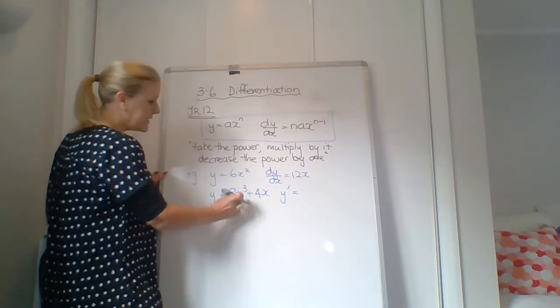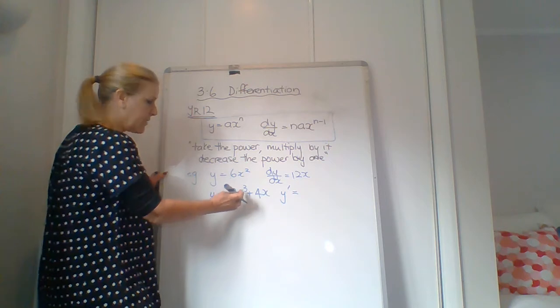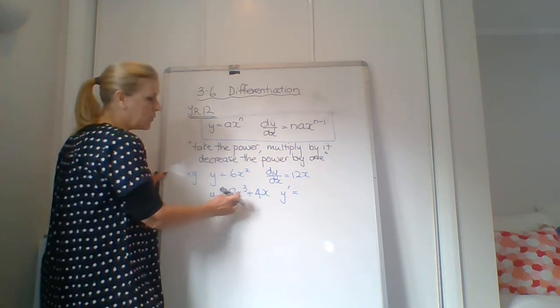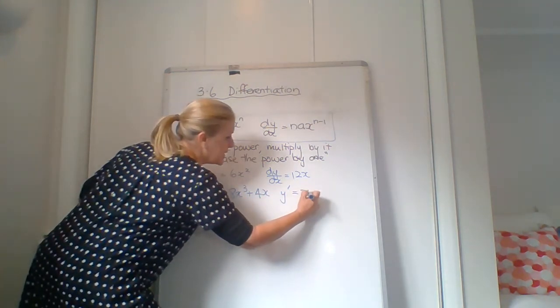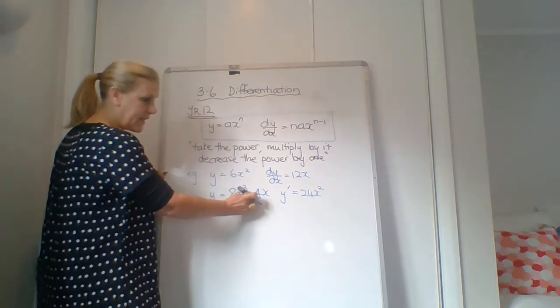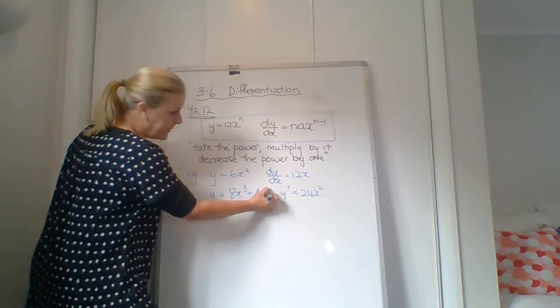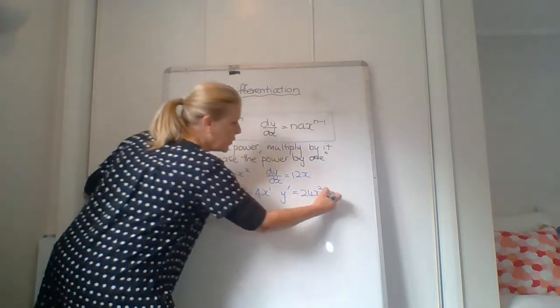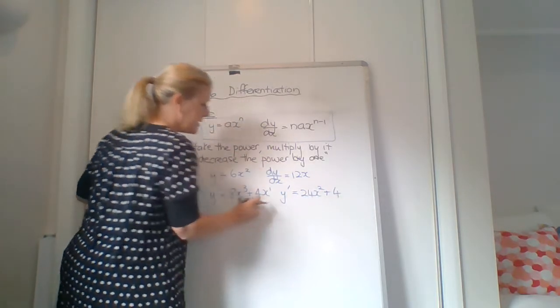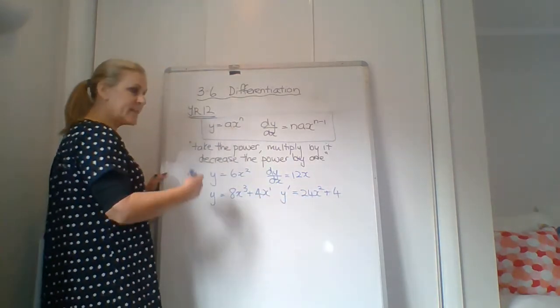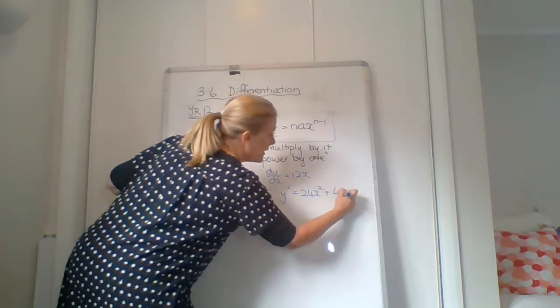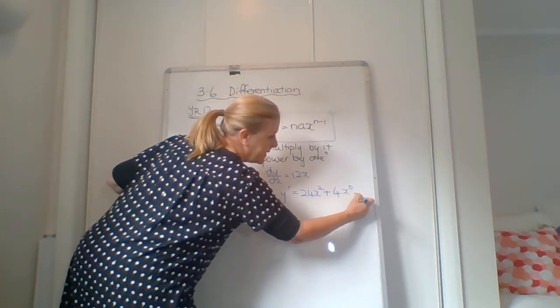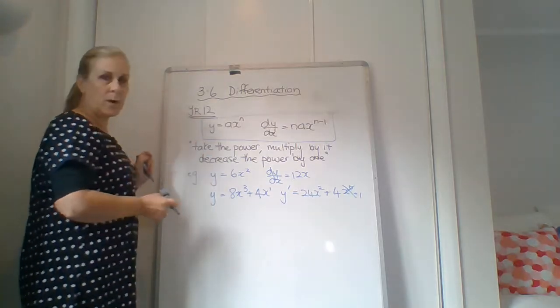Each term separately. This one first. Take the power, 3, multiply by it, 24, decrease by 1, 24x squared. Take the power, it's 1, remember. Multiply by it is 4. 4, decrease the power by 1, x to the power of 0. x to the power of 0 equals 1, so we actually don't write it, it's just plus 4.